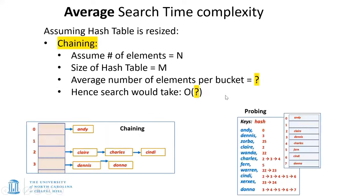In the last lecture, we were looking at chaining and trying to compute the time complexity for the chaining scenario. This is a probabilistic analysis. Let's assume we have n elements in the hash table of size m. The first question is: what is the average number of elements per index location — what we might refer to as per bucket?